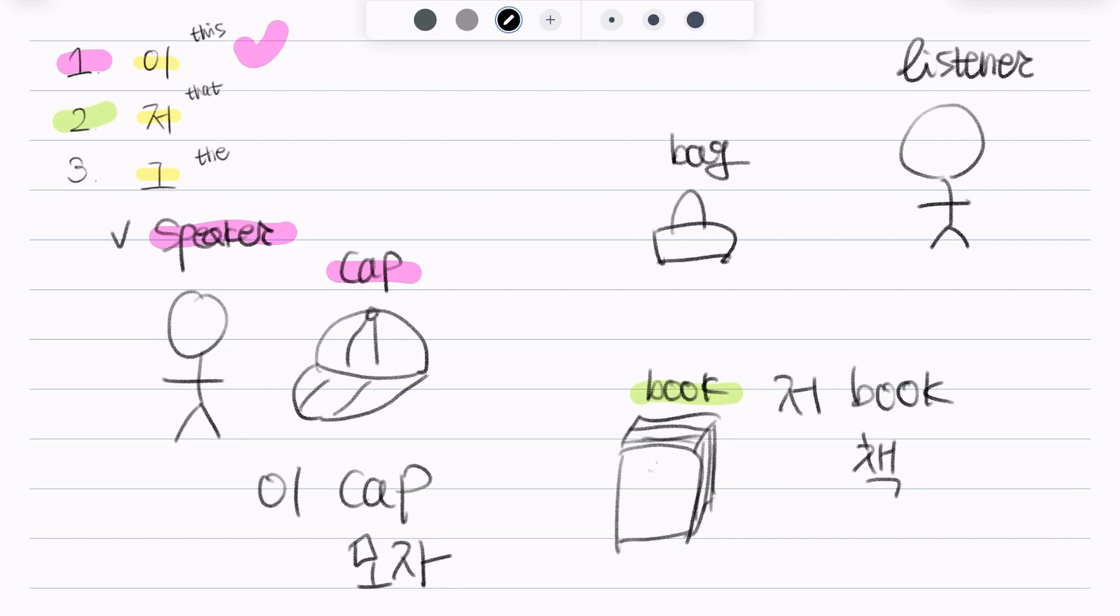And finally, 그 is used when it is close to the listener. So, we would say, 그 bag. So, 그 가방. Okay?